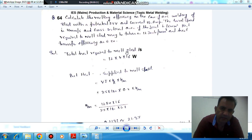Calculate the melting efficiency in case of arc welding of steel with potential 25V and current of 180A. The travel speed is 4 mm per second and cross-section area of the joint is 16 mm². Heat required to melt steel may be taken as 12 J/mm³, and heat transfer efficiency is 0.8.